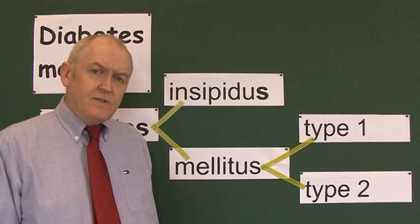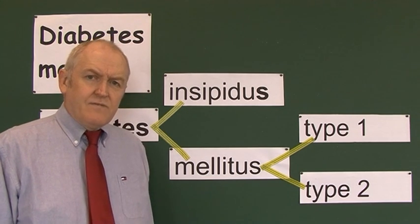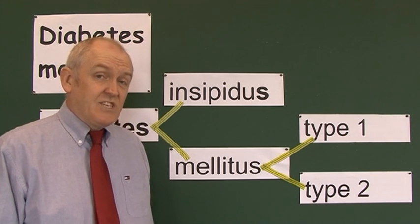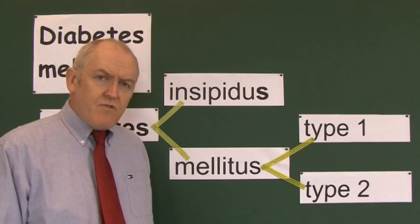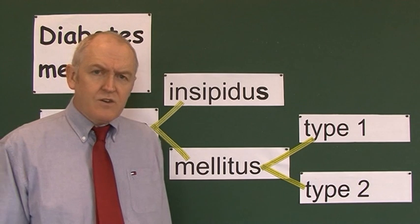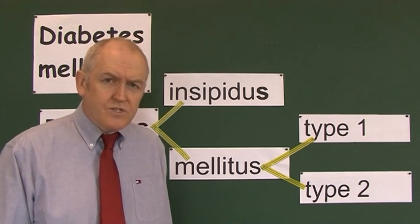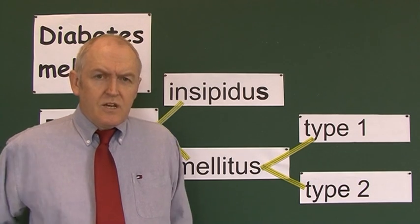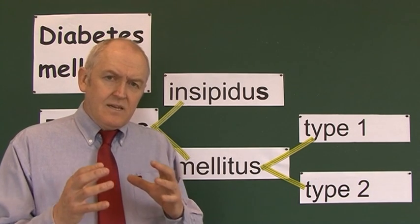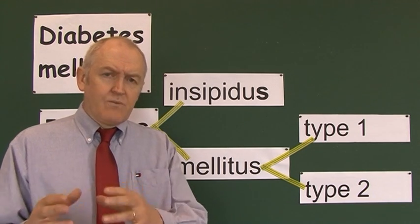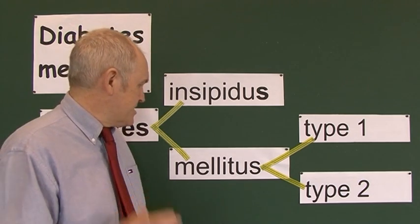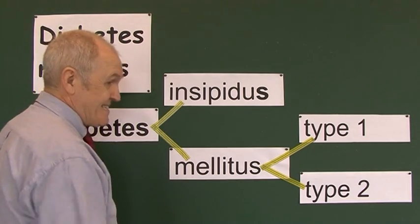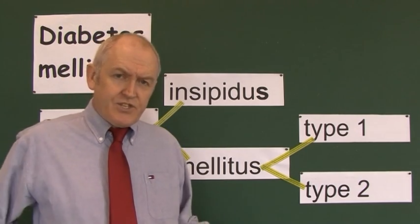In other countries it's much higher — working in Cambodia recently, the rate of diabetes mellitus was perhaps 10–15% or more of the population. It's a very common condition you'll encounter on medical wards, surgical wards, pediatric wards, care of the elderly wards, and in any community setting. We all need a solid background in diabetes mellitus — it's a condition we need to understand and be able to manage in our patients.